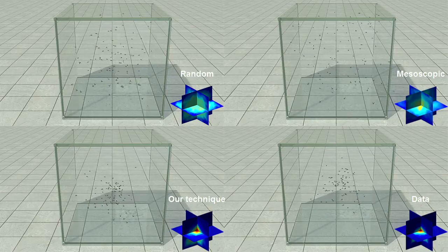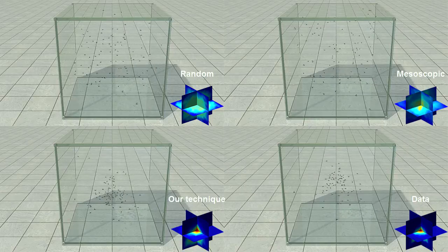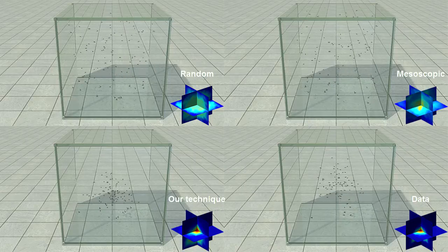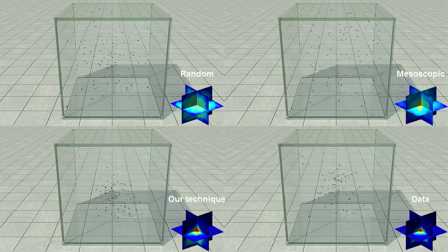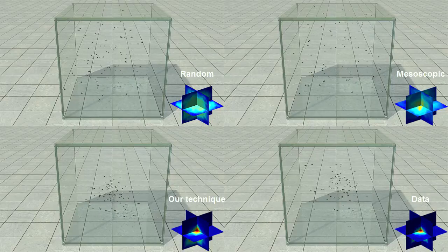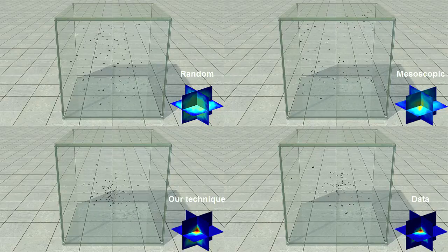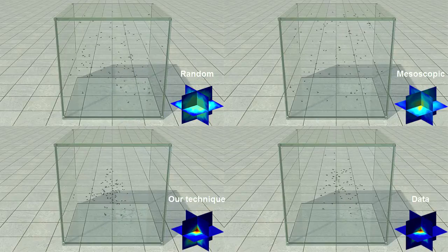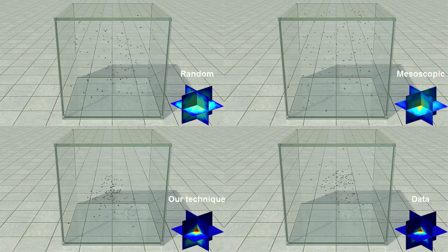You can see on the two top clips that, unsurprisingly, the random and mesoscopic waypoints methods can't reproduce the density fields well on their own. On the bottom left clip, however, with the macroscopic Metropolis-Hastings criterion, we can reproduce the actual density of the swarm quite well, which you can see on the bottom right clip.